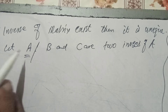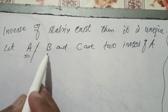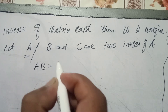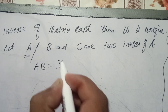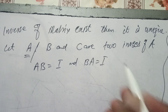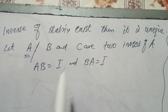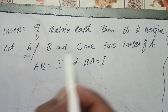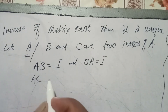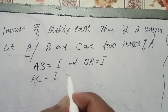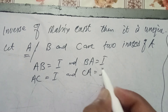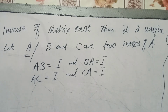If B is the inverse of A, then A times B equals the identity matrix, and also B times A equals the identity matrix. Similarly, if C is also an inverse of A, then A times C equals the identity matrix, and C times A equals the identity matrix.